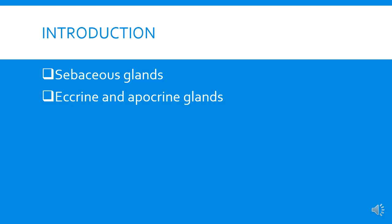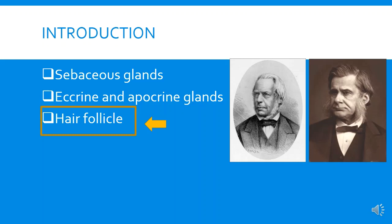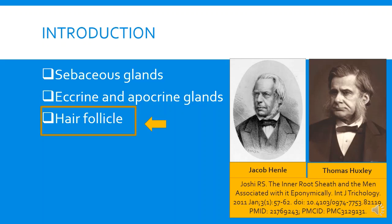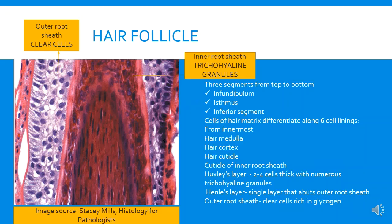Cutaneous adnexal structures are sebaceous glands, eccrine and apocrine glands, and hair follicle. Today I will be focusing primarily on hair follicle. Before going into the topic, I would like to talk about a little history. These two gentlemen are Dr. Jacob Henle and Thomas Huxley — the pioneers to work on the anatomy of hair follicle, having named all the layers and found out their functions. The primary functions of cutaneous adnexal structures are protection, lubrication, thermoregulation, and secretion. The function of hair follicle mainly is the growth of hair, and apart from that, to repair and regenerate the epithelium in case of an injury.